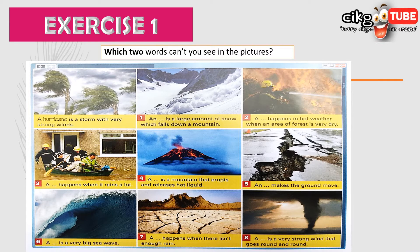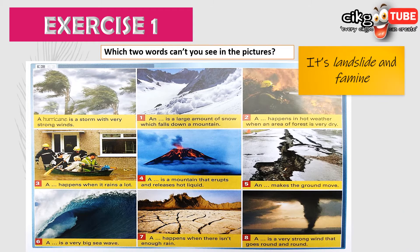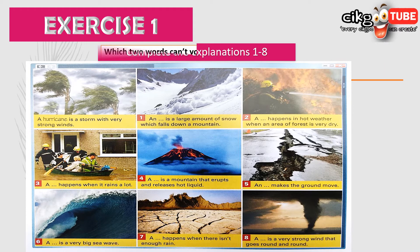Which two words can't you see in the pictures from all the words you have heard? Yes, it's landslide and famine. Now complete the questions from number one to number eight — fill in the blanks. You can pause the video and resume once done.